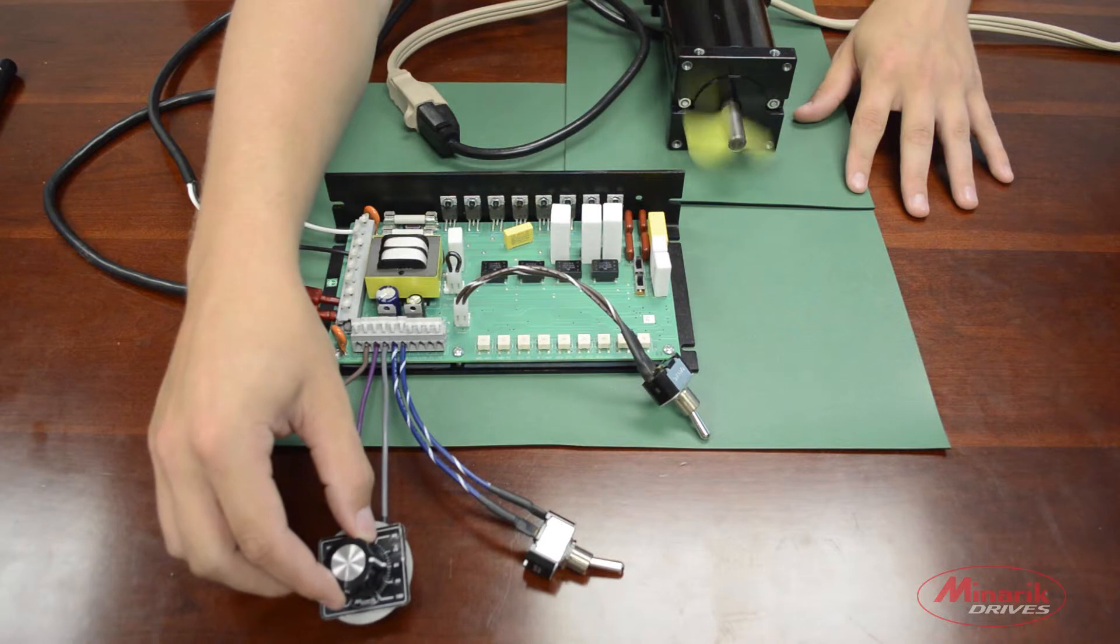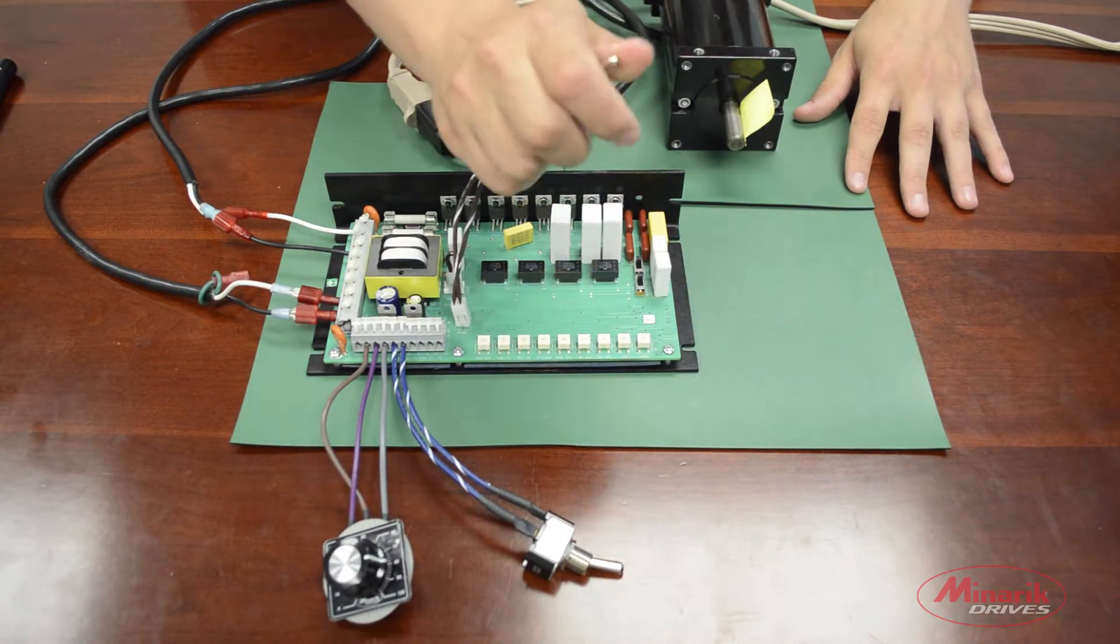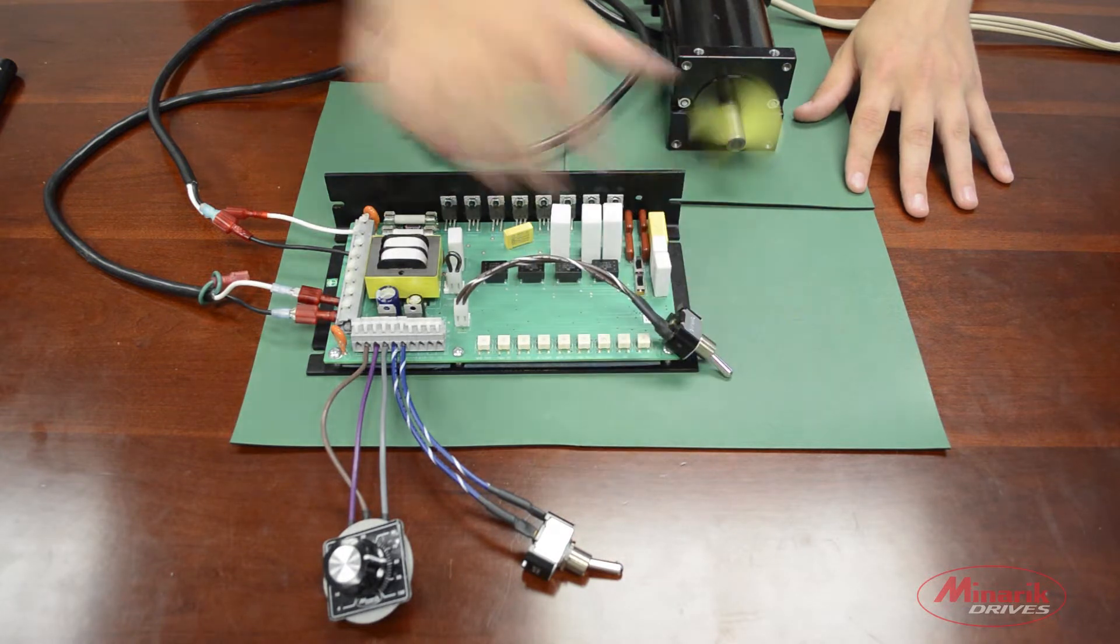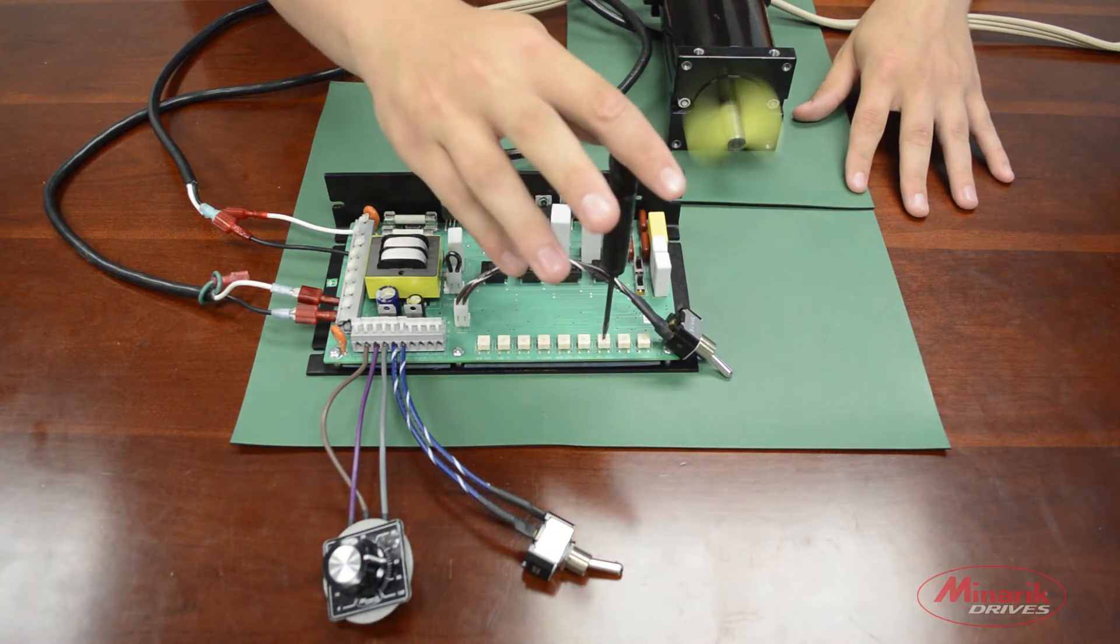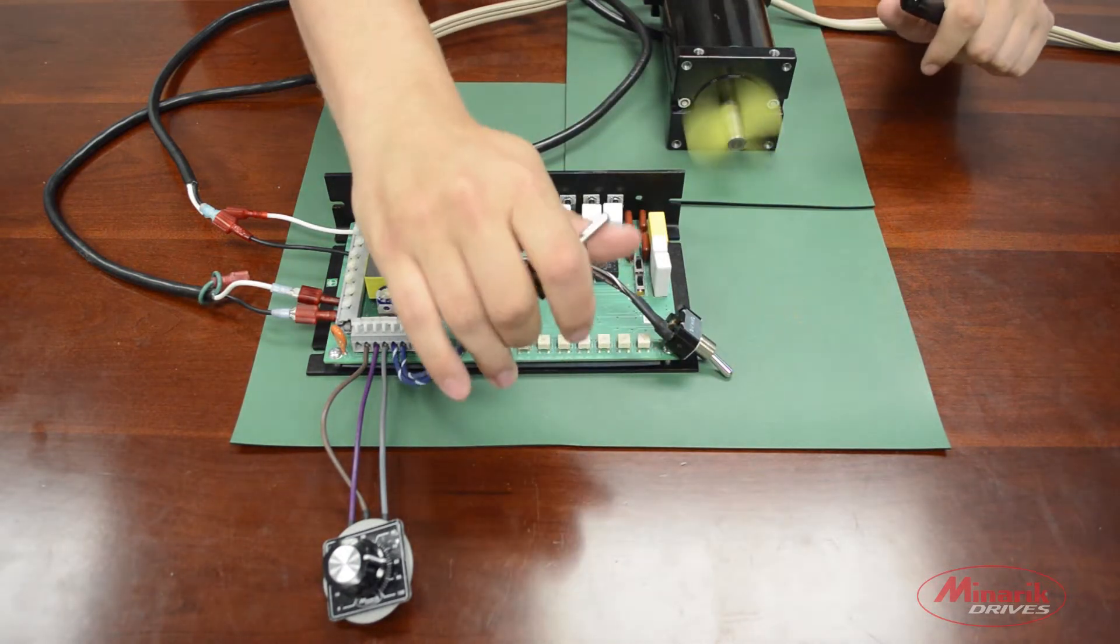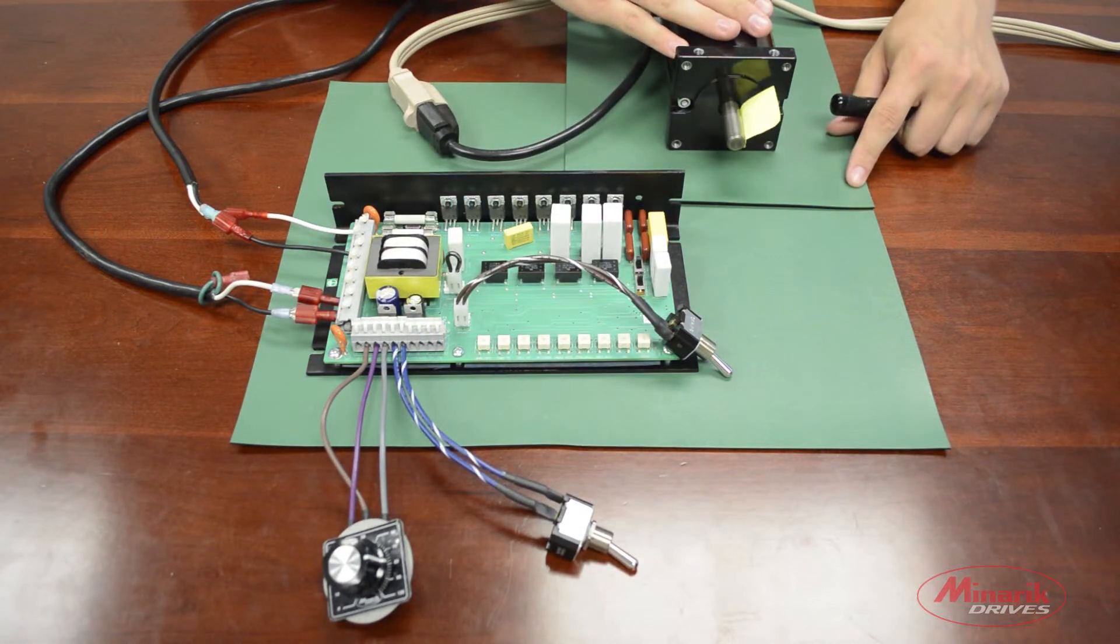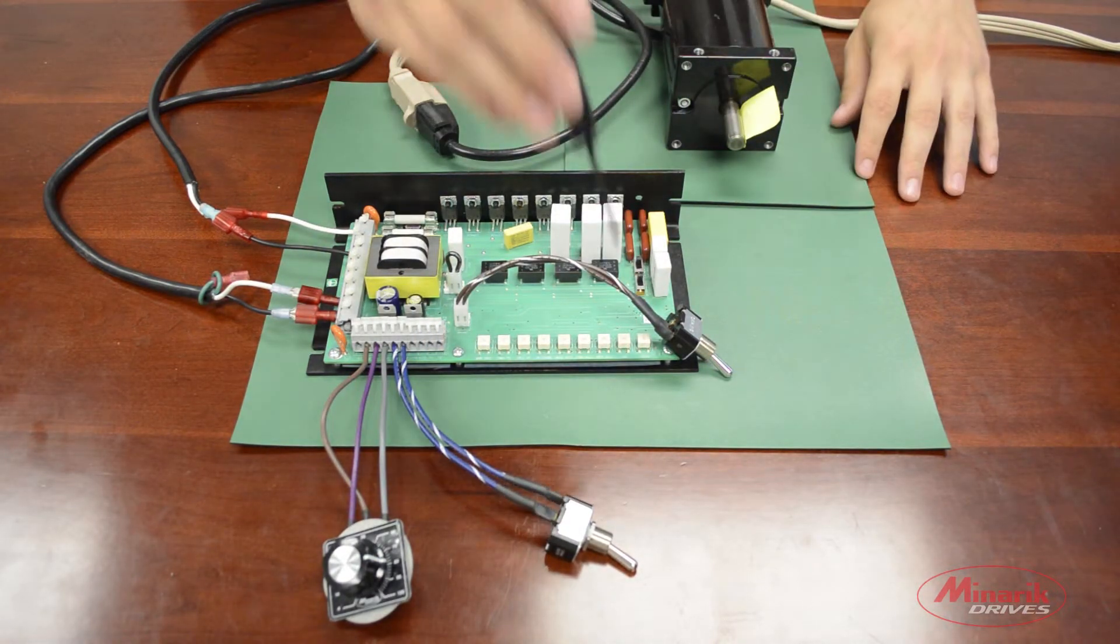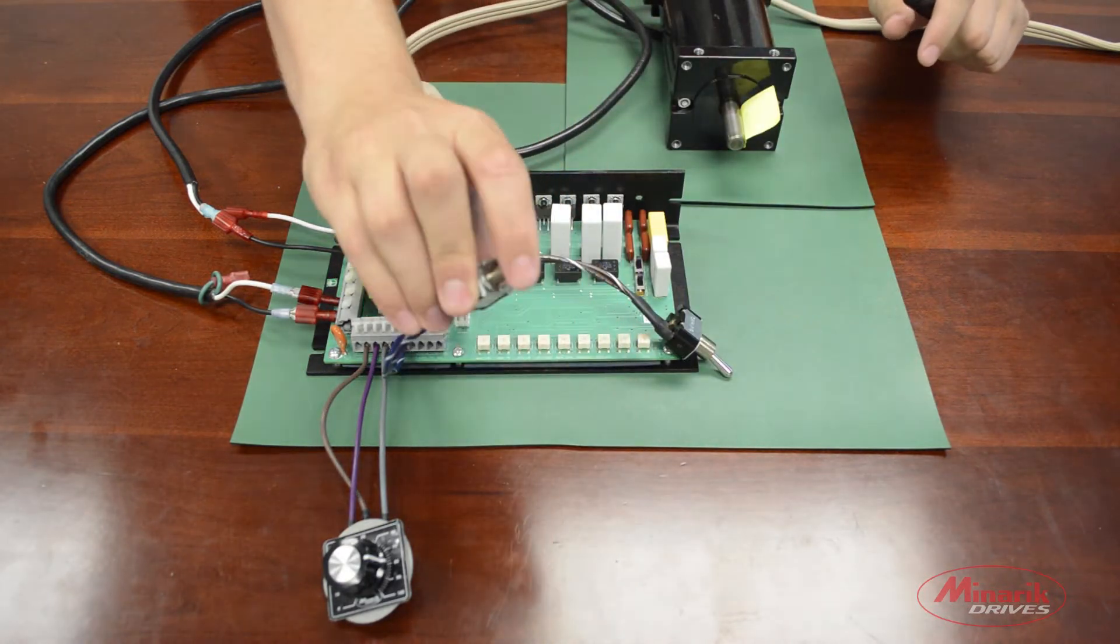The next step is to test both switches. First, the inhibit switch. And next, the run brake switch. To test the run brake switch we'll turn up the reverse acceleration trim pot. So that when we activate the run brake, we notice the motor decelerates down to zero. We'll turn the trim pot back down to zero and unactivate the run brake.